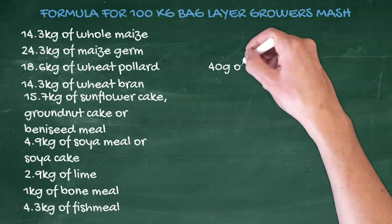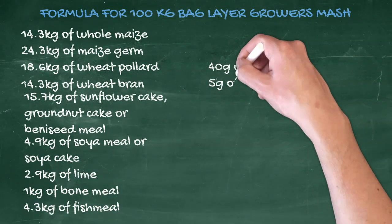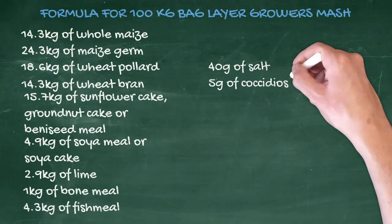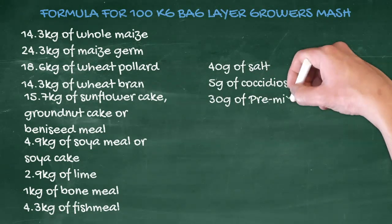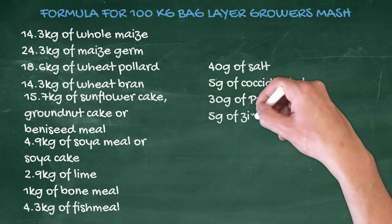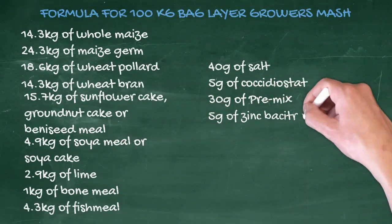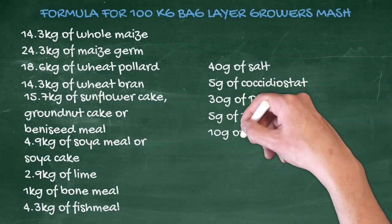40 g of salt, 5 g of coccidiastat, 30 g of pre-mix, 5 g of zinc bacitracin, 10 g of toxin binder.